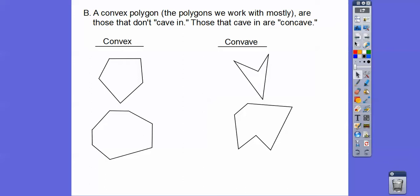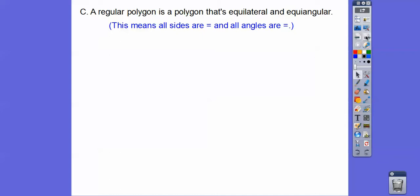A regular polygon is a polygon that's equilateral and equiangular, which just means all the sides are equal and all the angles are equal. Like a stop sign - a stop sign is a regular octagon, eight sides. All the sides are equal, all the angles are equal. A square is a regular quadrilateral. All the sides are equal, all the angles are equal.